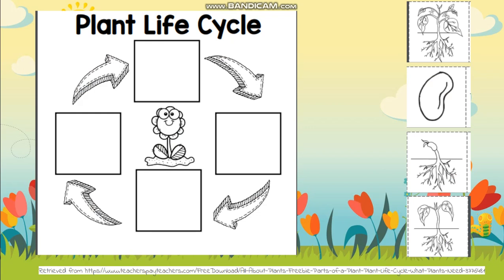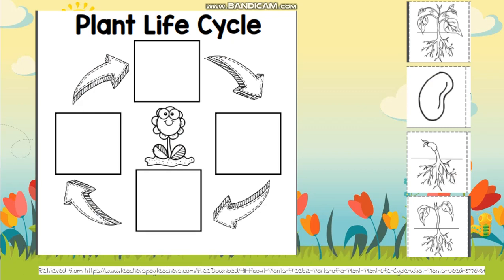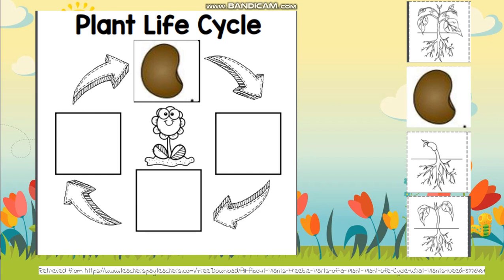Now it's like a short quiz time and I will do it with you together. We have four pictures on the right side — which one should go first, which is the very beginning, like the little tiny baby time for our plants? Three, two, one — the answer is the seed! Let's put our seed in the top square. That's our beginning stage.